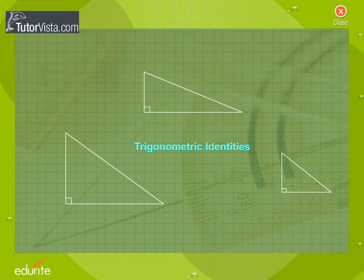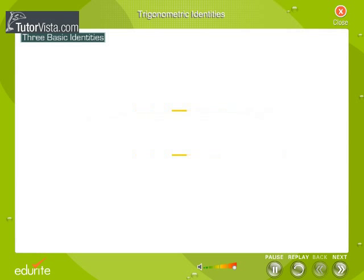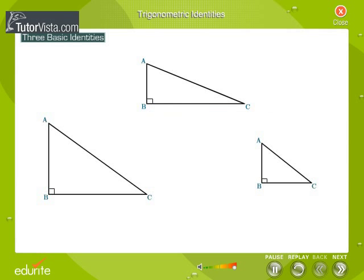Trigonometric Identities. A trigonometric identity is an equation involving trigonometric ratios of an angle A, which is true for all values of A. Here are some simple trigonometric identities.